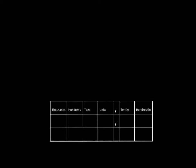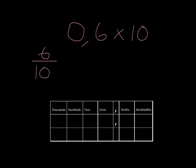Let's just take a look at if we wanted to do 0.6 multiplied by 10. Well, 0.6 is just 6 over 10. And if we multiply that by 10, which is just 10 over 1, we can cancel and we get our answer of 6.